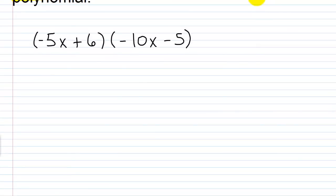So I have negative 5x plus 6 times negative 10x minus 5. In the next lesson, we're going to talk about something called FOIL — it's a mnemonic device when you multiply two binomials, because it occurs so often.